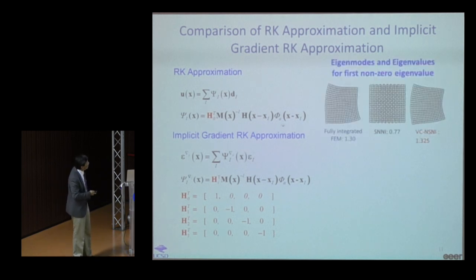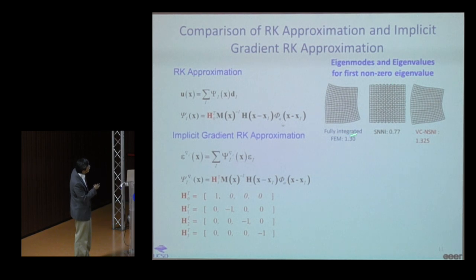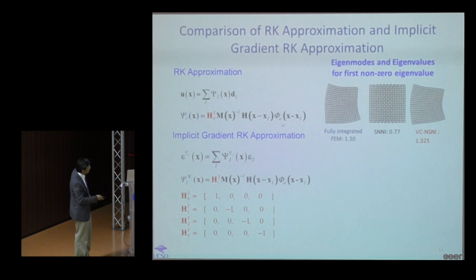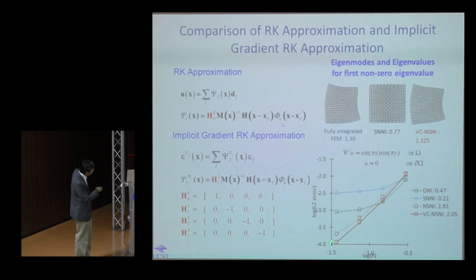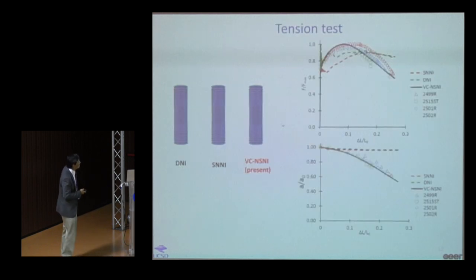Testing with SNNI shows unstable modes, while naturally stabilized nodal integration (NSNI) with variational consistency correction gives correct eigenmodes and eigenvalues matching fully-integrated FEM, without affecting accuracy — still maintaining the optimum convergence rate of two.